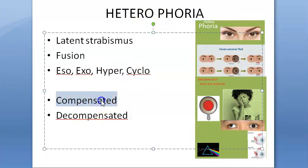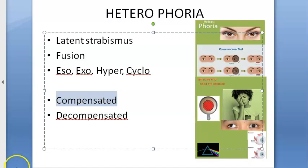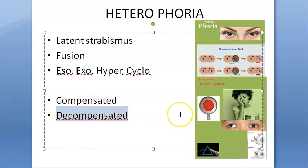There are two states: compensated and decompensated. Compensated means there are no subjective symptoms — whatever imbalance exists is being compensated for. Decompensated means multiple symptoms appear: muscular fatigue, headache, eye ache, difficulty changing focus, photophobia, failure to maintain binocular single vision, blurring, crowding of words, intermittent diplopia, intermittent squint, and defective postural sensation — difficulty judging the distance of objects, especially moving objects. For example, a cricketer trying to catch a ball might misjudge its position.